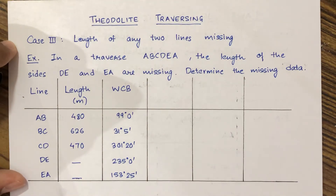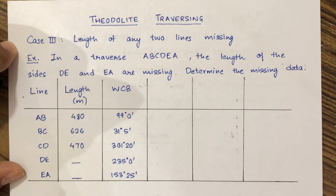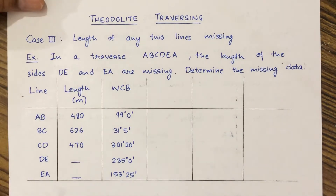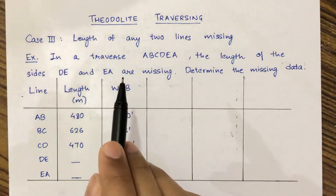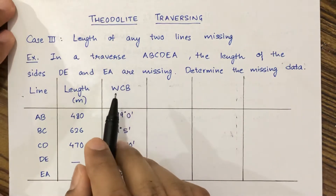Hello all. In my previous video we had solved the cases on finding the missing data of theodolite traversing. In that we had seen length and bearing of the same line missing, as well as length and bearing of different lines missing. Now we will solve Case 3, that is the length of any two lines missing. Let us solve one example for this.